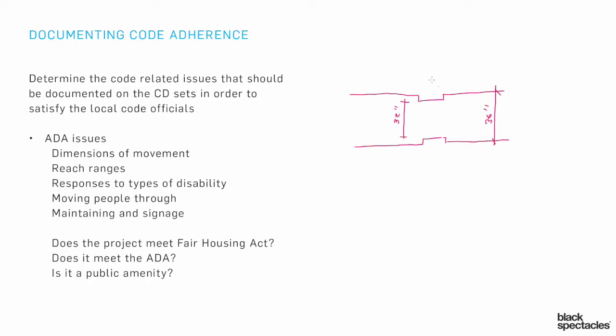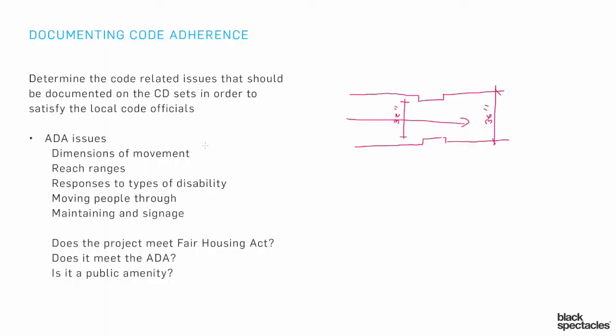If we didn't have those dimensions on there and yet we were calling that an accessible route, the code officials would definitely balk at that. They would want to know the dimensions to be able to say, yes, that is in fact an accessible route. Issues like that would mostly be about ramps, but also access to doors - we've talked about the size of the box that fits around a door, requiring a certain dimension next to the door. With a 36-inch door, you'd have an 18-inch space next to it.